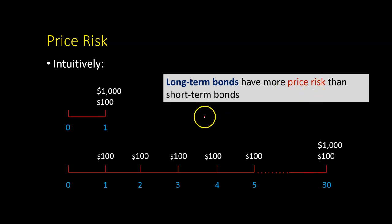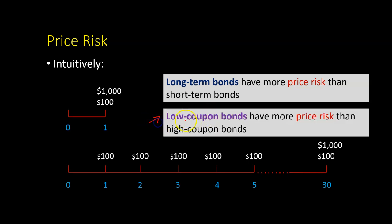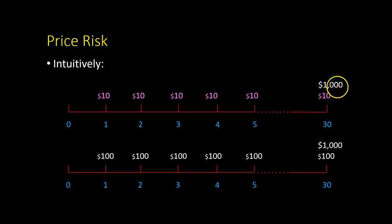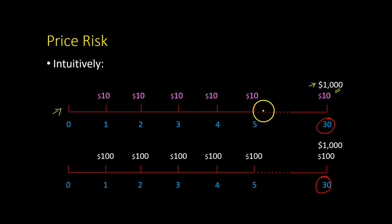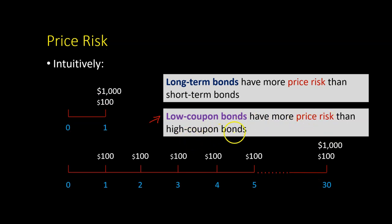In fact, if you understand that logic, then you will also appreciate why low coupon bonds will have more price risk than high coupon bonds. Consider two bonds that are otherwise identical — the same face value of $1,000 and the same time to maturity of 30 years. The only difference is that one bond pays a coupon of $10 annually, whereas the other makes a coupon payment of $100 annually. Notice that $1,000 relative to $10 is a much higher value for the first bond compared to the second, where $1,000 is in relation to $100. In other words, the price of the low-coupon bond is going to be mostly determined by the $1,000 face value 30 years from now, making it more sensitive to yield changes. And so that is why we say that low coupon bonds have more price risk than high coupon bonds.